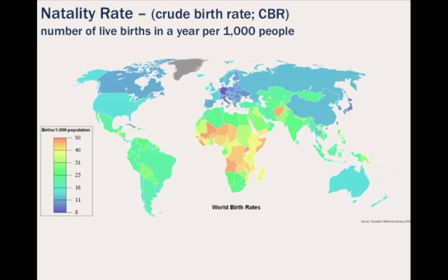Let's talk about some important terms, such as natality rate, which is also known as the crude birth rate, or CBR for short. This is the number of live births in a year per 1,000 people. What you will notice with a lot of these different rates and measures is that you can see where you have the more developed countries, their measures will be relatively consistent — the same thing on the other side with the less developed regions of the world.